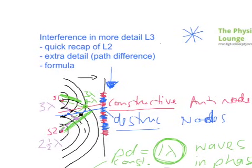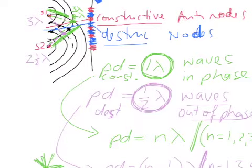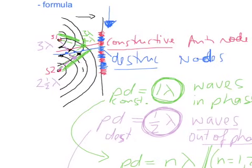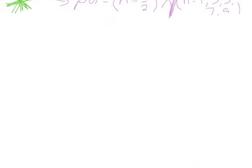We had the quick recap of level two, looked at the extra detail of path difference in more detail than we've done at level two. Now we're going to look at formula and tidy up this messy diagram by using some more high-level maths and some cool stuff from level three.